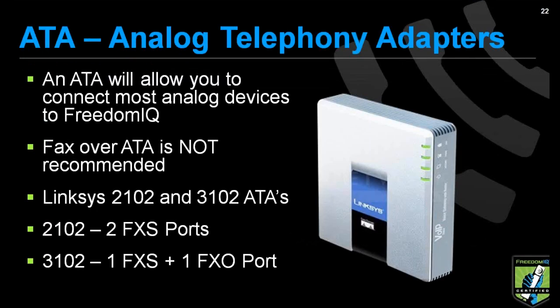Analog telephone adapters: there's not a lot of built-in features with these devices. If you want to connect a cordless phone and use just a plain old telephone, you can use this device. However, you're not going to get a hold button or a transfer button. We do have some functions available by pressing the star key — if you're on a call and you press the star key, that's going to put the caller on hold. From there, you can press the pound key to hear a menu of options. Just because the features aren't built into this device, we can still access a lot of them through the Freedom IQ menu by pressing star and then pound.